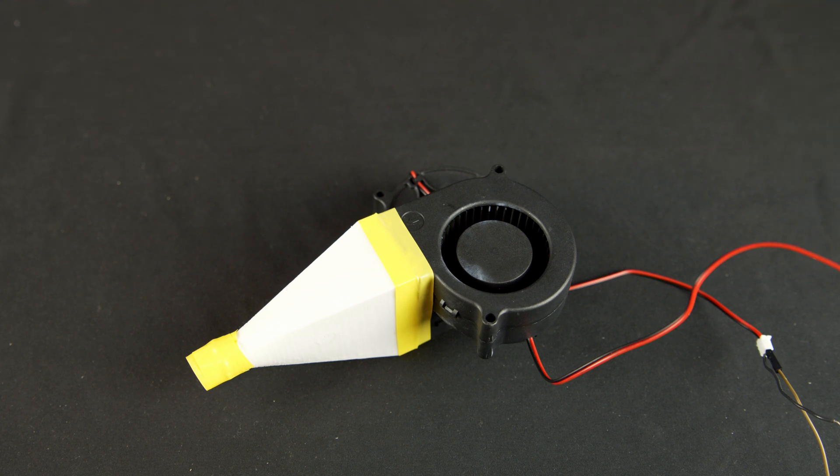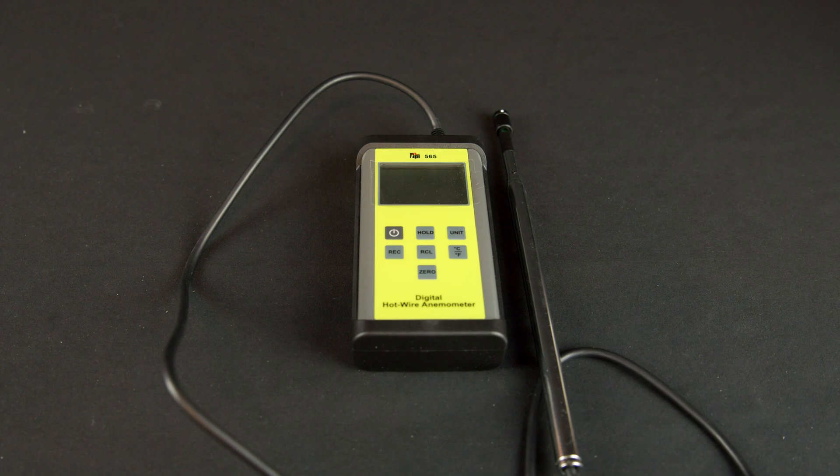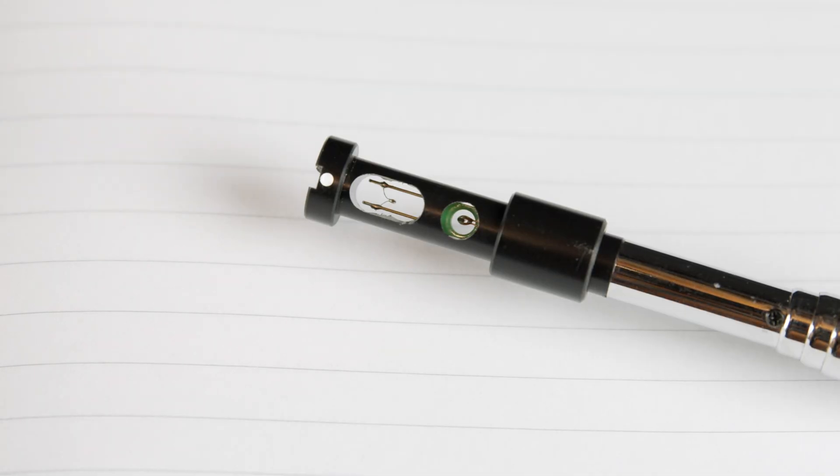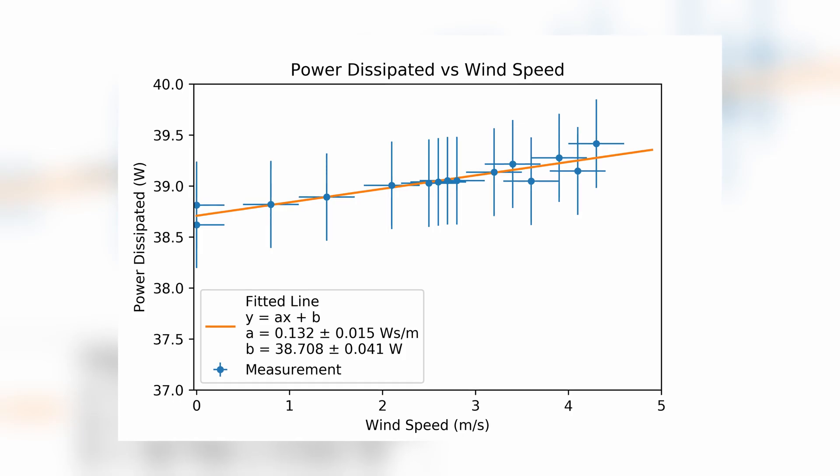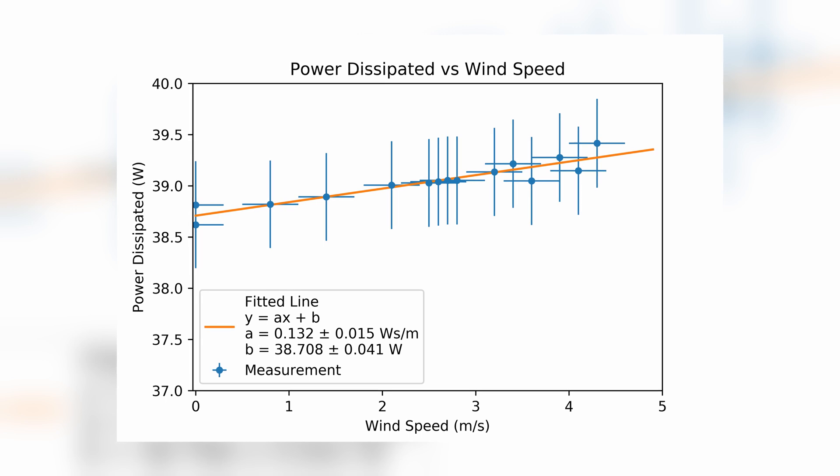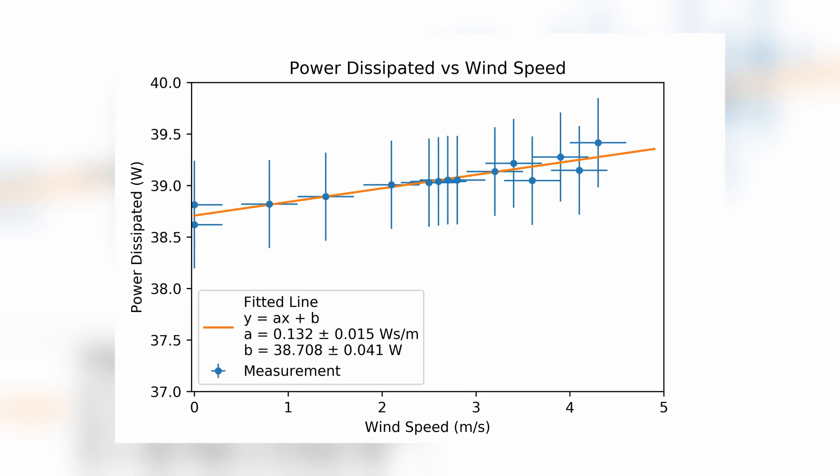Finally, I blow wind over the coil using some computer fans. I measure the wind speed using a commercial hot wire anemometer. When I plot the power dissipated over the wind speed, I see a linear relation in this velocity range.